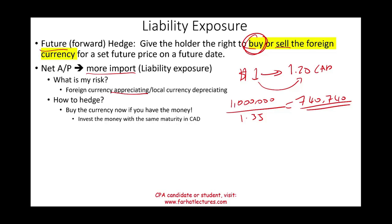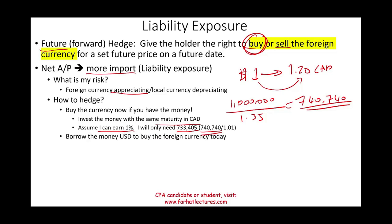If you buy the Canadian dollars today and invest them in a Canadian account to earn some return — assume 1% for 60 days — you would only need $733,405, since you'd earn 1% on the $740,740. That's one option if you have the money. If you don't, you might want to borrow the money to buy the foreign currency today, though you'd need to evaluate whether the interest cost is worth the protection.